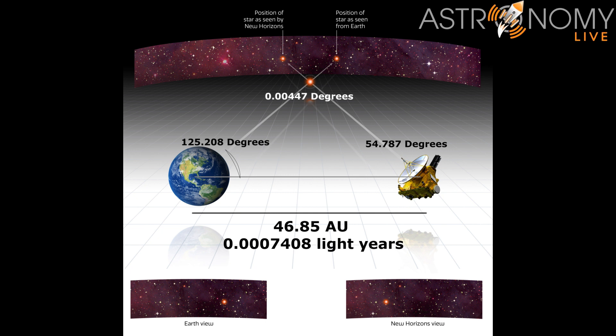This triangle adds up to a total of 180 degrees, and so because we know the other two angles, we now know the third angle, which is 54.787 degrees. And now we can use the law of sines to find the side of the triangle between the Earth and Wolf 359. In other words, we can now calculate the distance between Earth and Wolf 359.